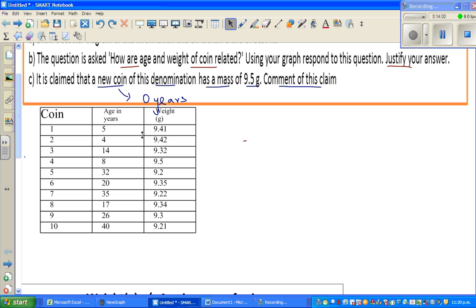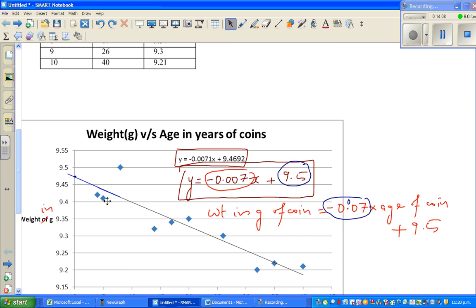There is a relationship between age in years of coins and the weight of coins. And what tells me is that the gradient of this line. If you have a graphic calculator you can write it. Hopefully this video has been helpful, see you in the next one.